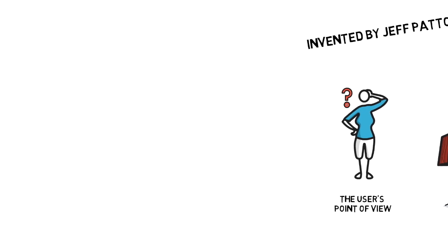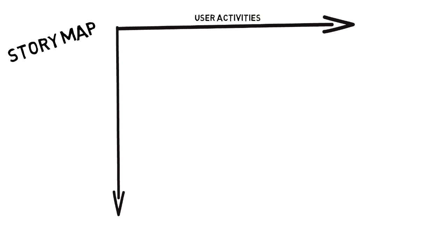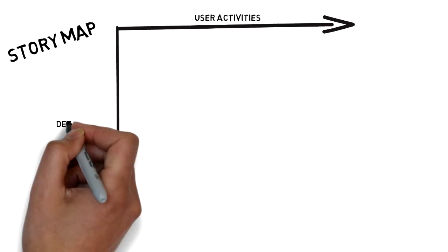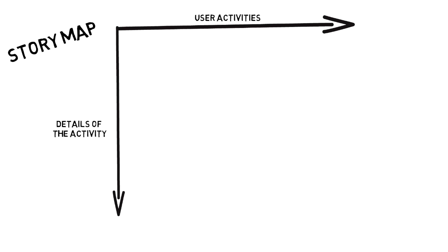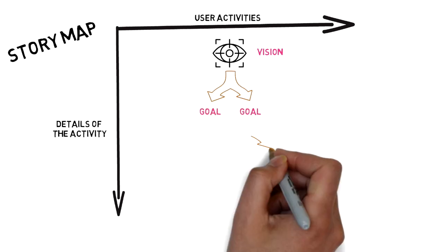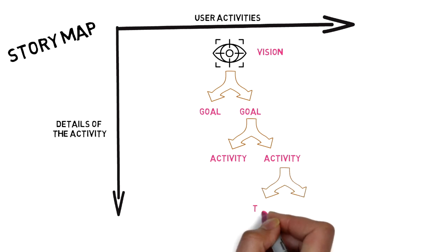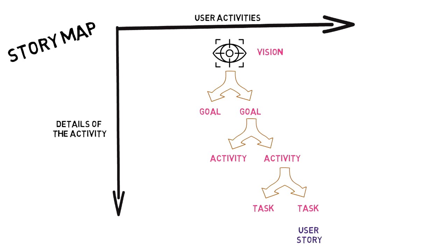Story mapping consists of ordering user stories along two independent dimensions. We arrange user activities along the horizontal axis in rough order of priority. Down the vertical axis, it represents the details of these activities. We start a story map from an overarching vision. A vision is achieved via goals; goals are reached by completing activities; and to complete an activity, a user needs to perform tasks — and these tasks can be transformed into user stories.